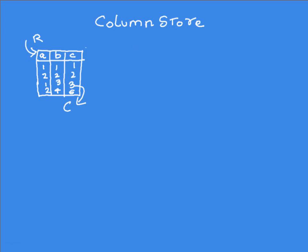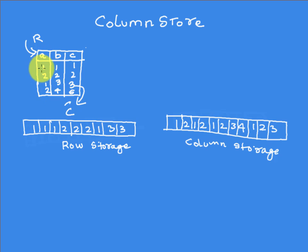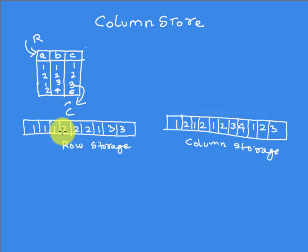Just two more concepts and we're done with this video. Let's take a look at column store. We will take a look at the table and then how it is stored in a row fashion, and then how it is stored in a column fashion. This table has three columns — A, B, and C — with one header row and then row 1, row 2, row 3, and row 4. If you were to store this in a row fashion, you would take the first row — that is 1,1,1 — and store it sequentially in memory, and then take the second row and store it sequentially, and so on.